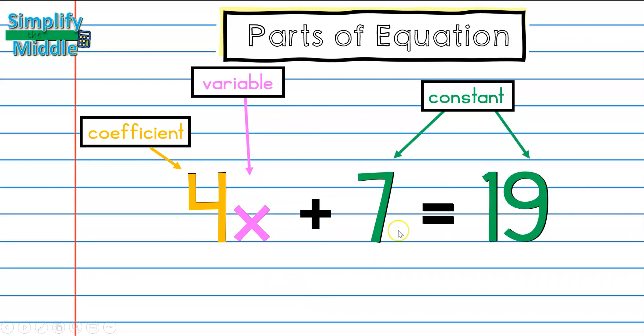Then we have our constants, like 7 and 19. Both 7 and 19 stand alone, so we think of our constants as numbers that stand alone. They have no variables.